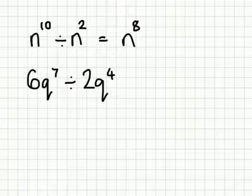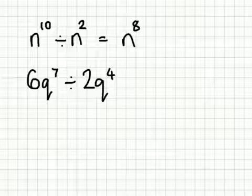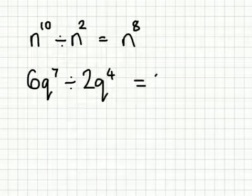With the same thought process, we could look at this here. We have 6q to the power 7 divided by 2q to the power 4. Let me just think back to what we did before. 6 divided by 2 is 3.